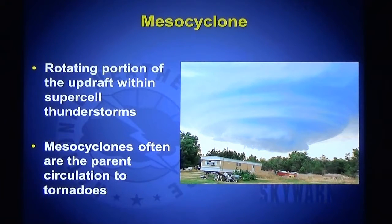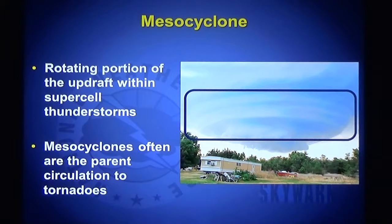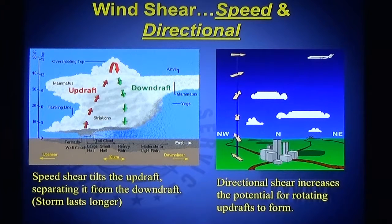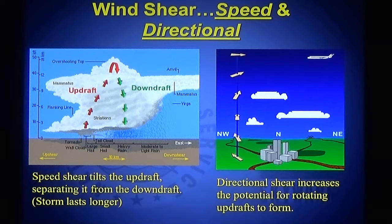The rotating part of the updraft within a supercell storm is called the mesocyclone. Mesocyclones are often the parent circulation to tornadoes. Wind shear is a very important part of getting a thunderstorm to rotate. In meteorology, we talk about two types of shear — shear just means a change with height, a change as you go up through the atmosphere. There's speed shear, where the wind speed changes as you go up, and direction shear, where the wind direction changes. To get a supercell, we need both speed and direction shear.